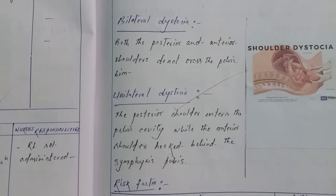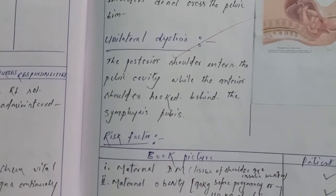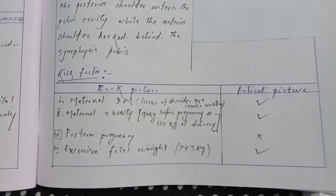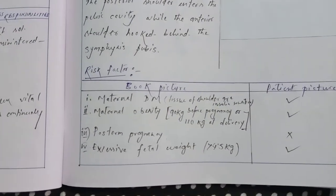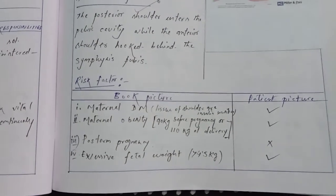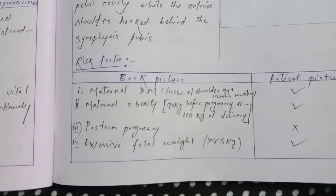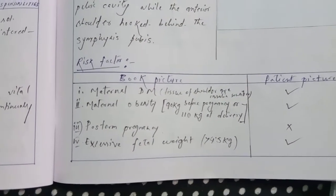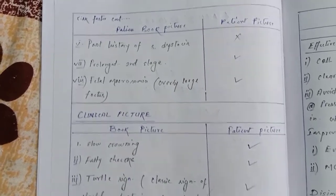Risk factors include maternal diabetes mellitus, maternal obesity, post-term pregnancy, excessive fetal weight more than 4.5 kg, prior history of shoulder dystocia, prolonged second stage, and fetal macrosomia (overly large fetus).